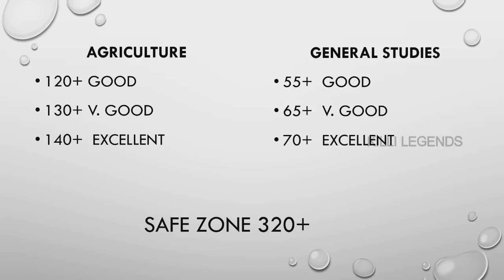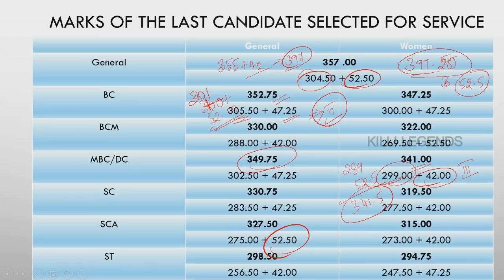So average — if you are above average, we must be above average. If you look at the save zone, you will see most categories — especially MBC and BC: 352.75, 347.25. That is the same as 341 and 349.75.